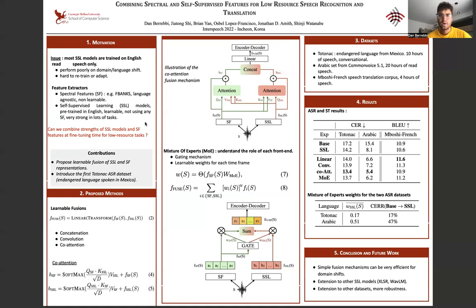So can we combine strengths of SSL representations models and spectral features at fine-tuning time in low-resource tasks? The main contribution of this paper is to study this slight possible combination and to provide learnable fusion of self-supervised learning and spectral feature representations that are working very well in practice. And we also introduced the first ASR dataset, which is an endangered language spoken in Mexico.